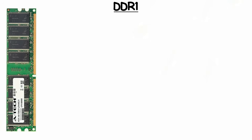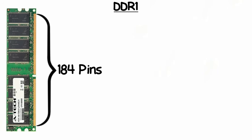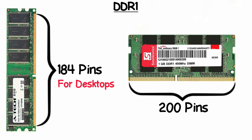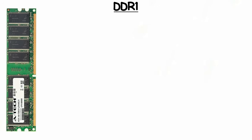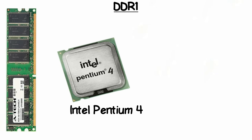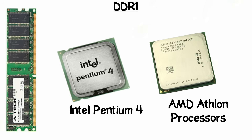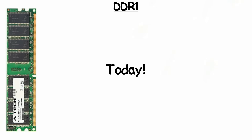DDR1 modules typically came in 184 pins for desktops and 200 pins for laptops, and ran at speeds from 200 to 400 megahertz with up to 3.2 gigabytes per second of bandwidth. It first showed up in computers with Intel Pentium 4 and AMD Athlon processors.